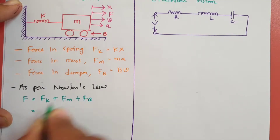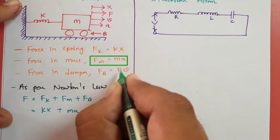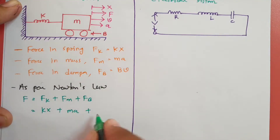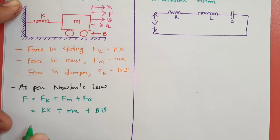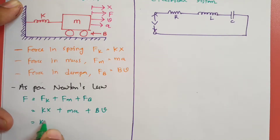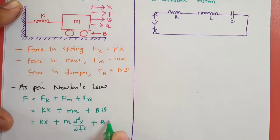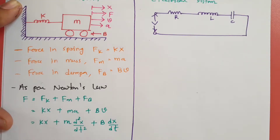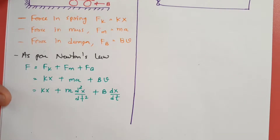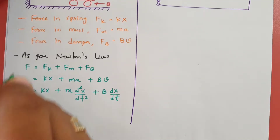So F_K is K×X, F_M is mass into acceleration, and F_B is B into velocity. Now we will make this equation in terms of displacement. So: F = K×X + M×(d²X/dt²) + B×(dX/dt). That is the resultant force equation.